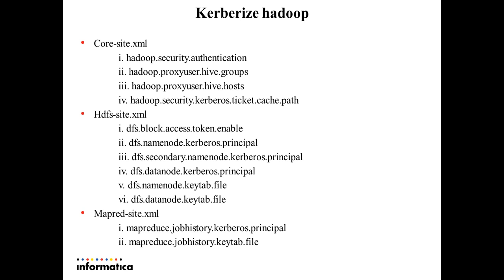Kerberizing Hadoop includes updating a few property values to include values with respect to Kerberos. hadoop.security.authentication is the first basic property that needs to be updated to hold the value 'kerberos' to identify the authentication type. During the demo, I will point out how the configuration looks like for Kerberos authentication with respect to Hadoop.